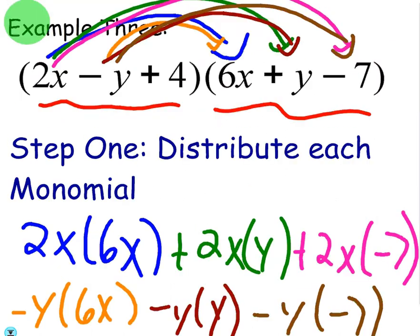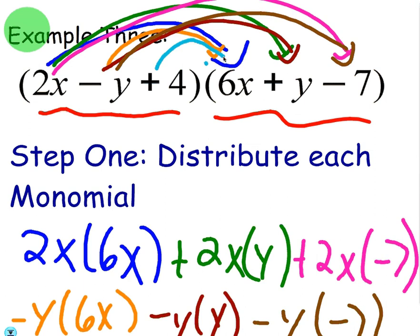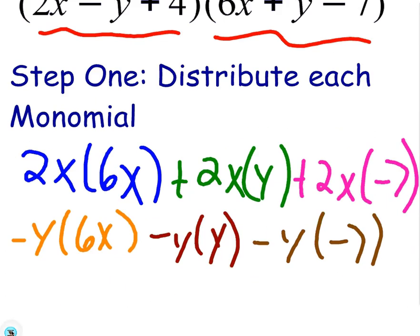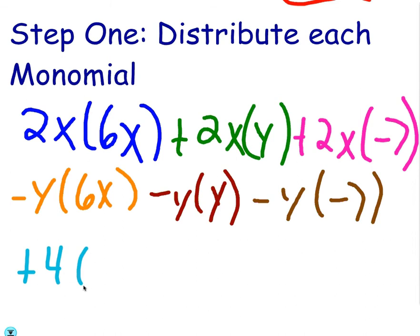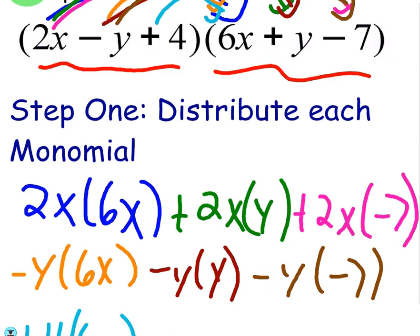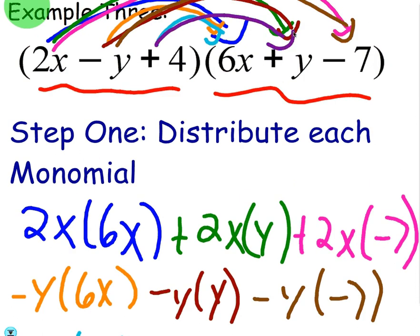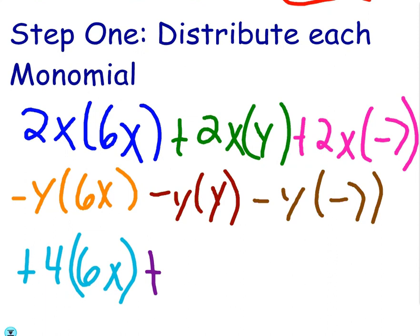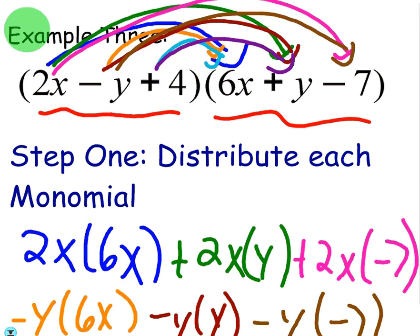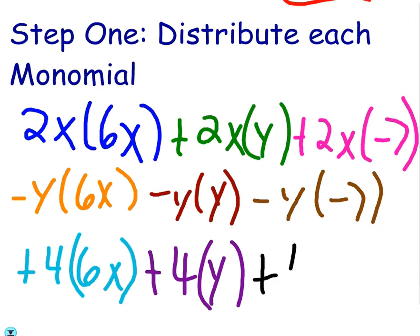Then you're going to distribute the 4. So you're going to take the 4 and distribute to the 6x. Then you're going to take the 4 and distribute to the positive y. Then we'll just use black for the last one. 4 and minus 7.